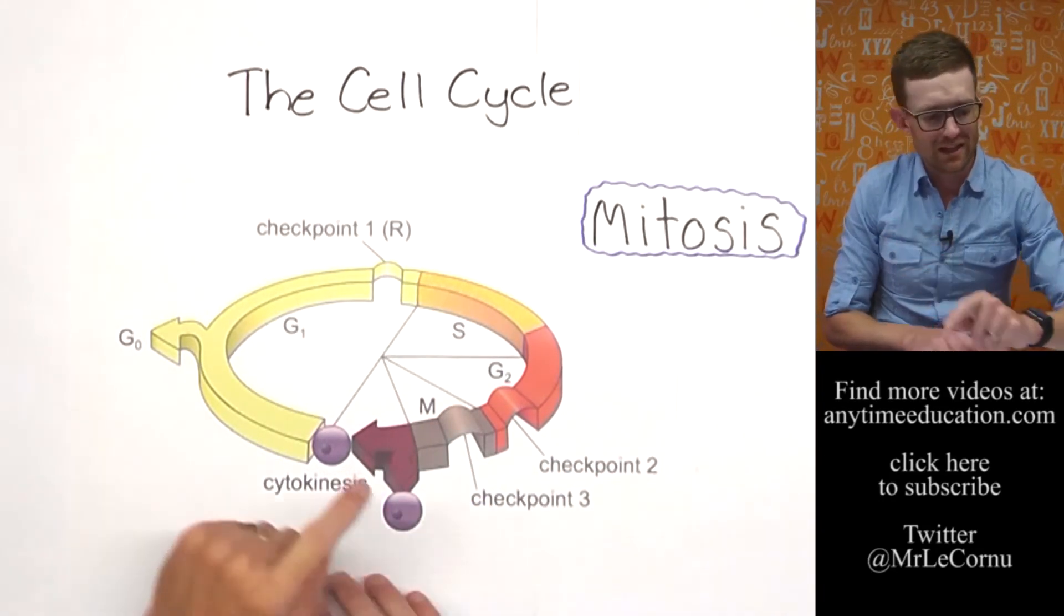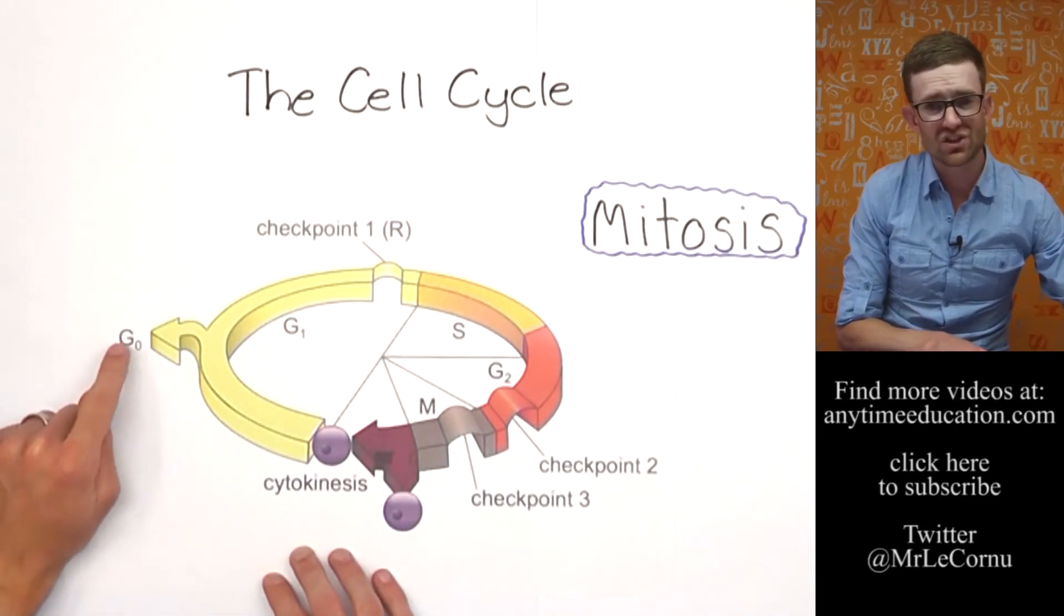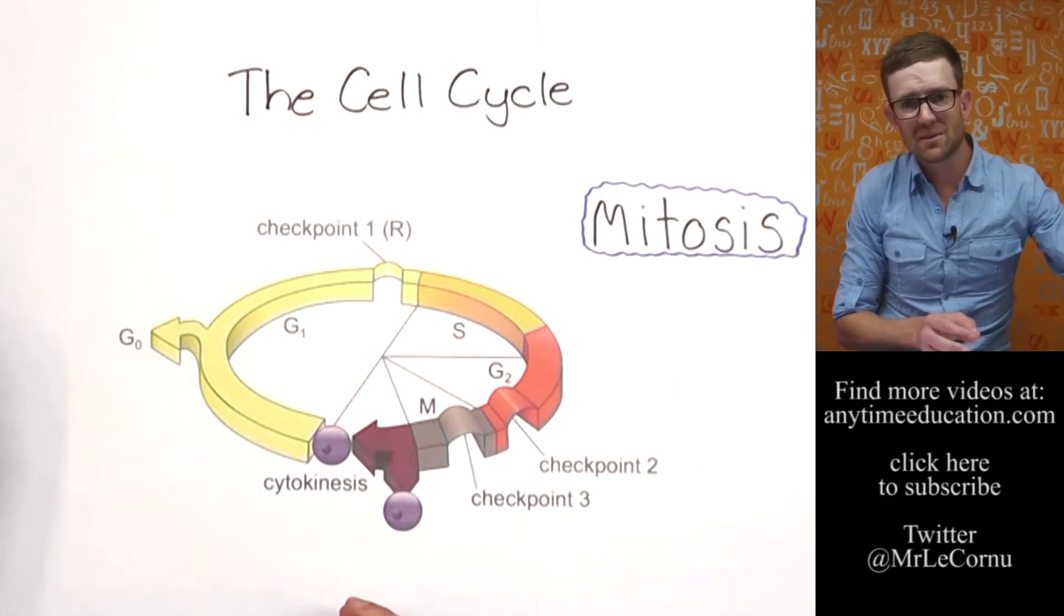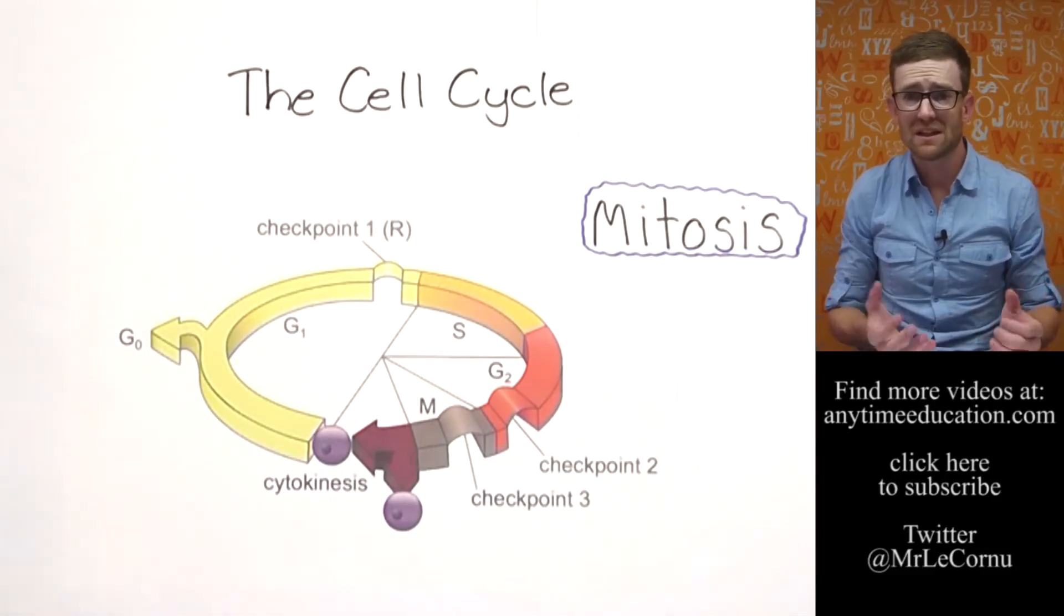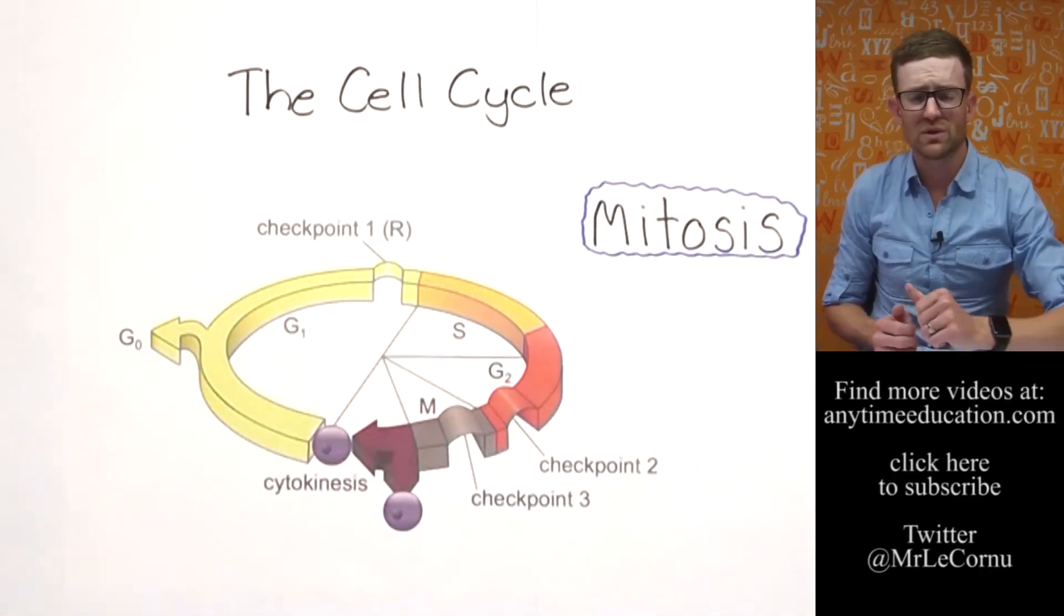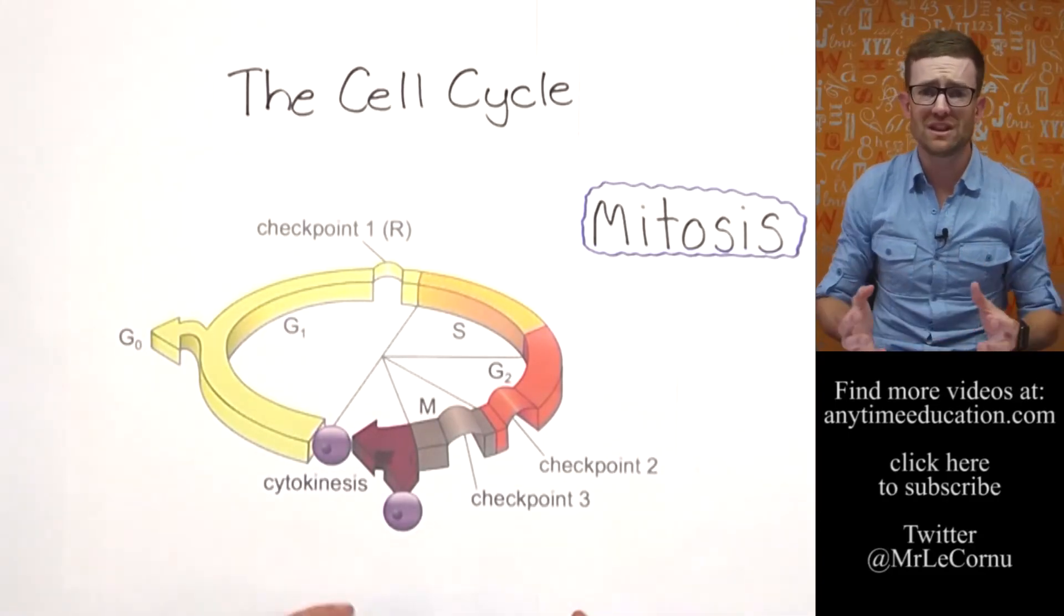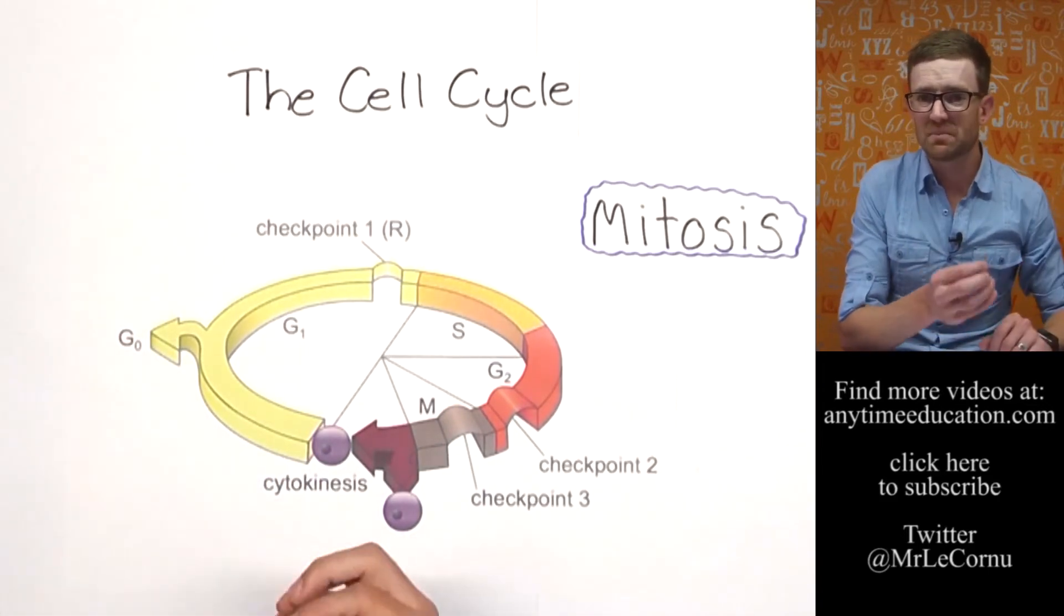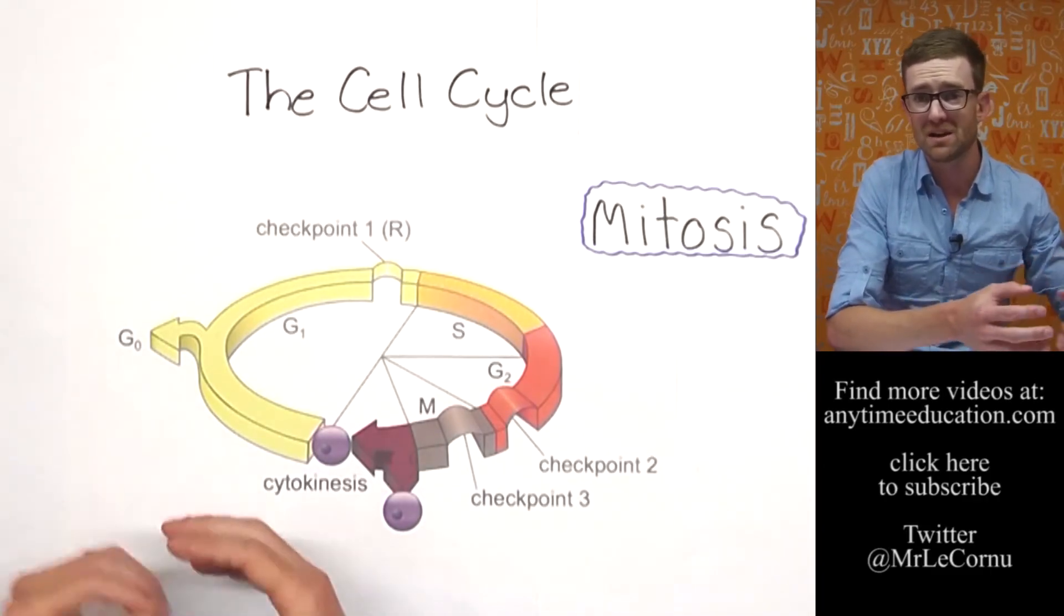One extra stage that you would have picked up - over here, where's this arrow going? We call this G naught. G naught is a stage that's entered by cells that differentiate, which means they specialize into a particular type of cell. So cells in the cell cycle would typically be stem cells. Stem cells are cells that haven't yet differentiated.